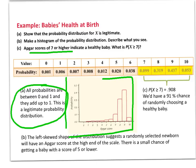The final question asks: what is the probability that a baby has an Apgar score of 7 or higher? We write this as P(X ≥ 7). There are four different outcomes that satisfy this, and we simply add them up. It turns out there's about a 91% chance that a random baby would have an Apgar score of 7 or higher.